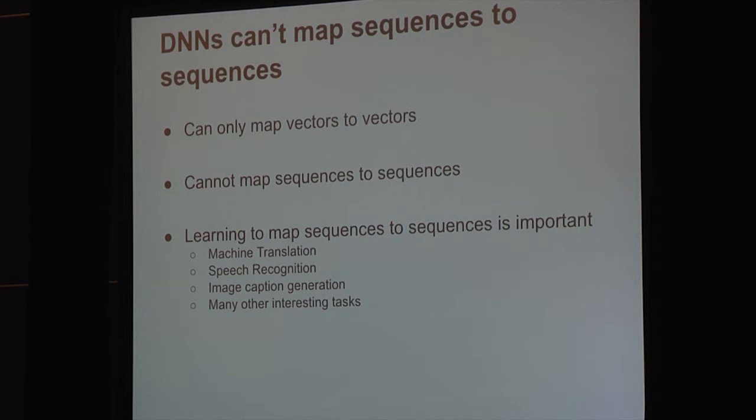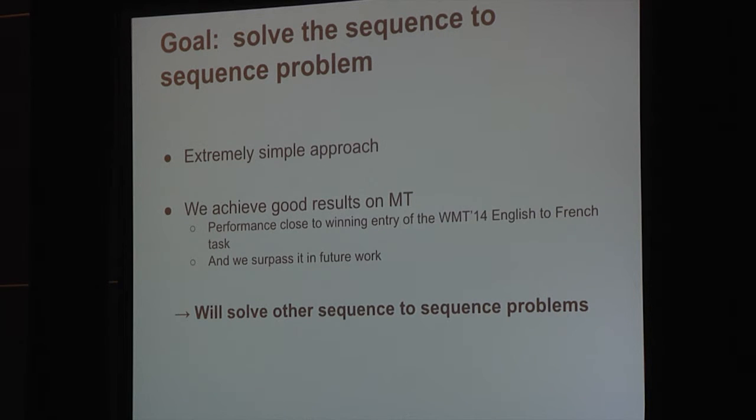Mapping sequences to sequences is not something that neural networks can do, or at least could not do at the time when we were doing this work. And there are many applications to it which are very interesting. For example, machine translation, speech recognition, recent image caption generation, question answering, summarization. All these problems can be expressed as you take a sequence which is an input and you produce an output. So our goal in this work is to solve the general sequence to sequence problem. We take an extremely simple approach, and we achieve pretty good results in machine translation.